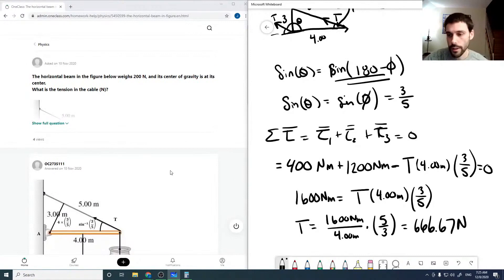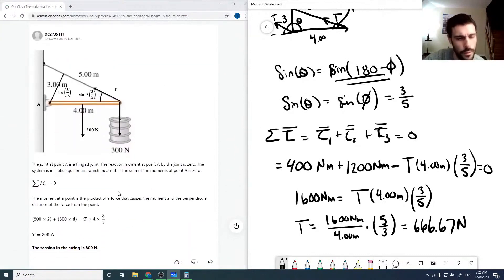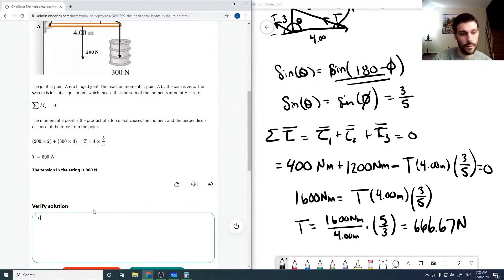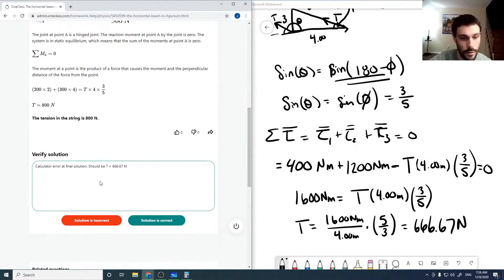If we check the solution here, we need to sum over all our torques. 200 times 2 plus 300 times 4 equals 1600, which equals 4 times 3/5 times the tension. Here they get that the tension is 800, which is just wrong. They made a calculator error. The final solution should be T equals 666.67 newtons, so the provided answer is incorrect.